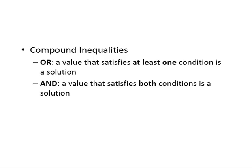If we see a compound inequality with the word 'or', a value that satisfies at least one of the conditions — one of the simple inequalities — is considered a solution. However, if the word 'and' is seen, only a value that satisfies both conditions is considered a solution. So remember: 'or' means at least one, and 'and' means both must be satisfied.